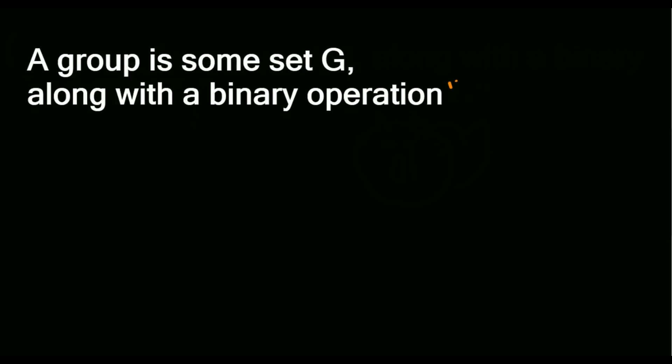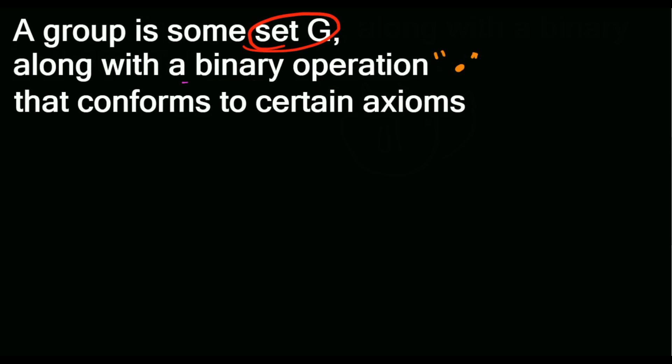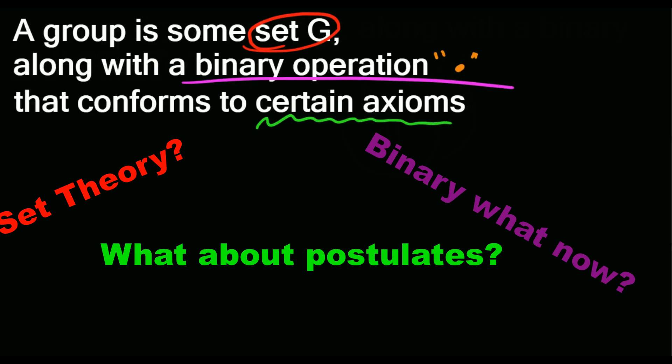So we define a group as some set G, along with a binary operation that conforms to certain axioms. Quite wordy, right? Well, unfortunately, most of the questions we answer in abstract algebra seem to pose a hundred more. We need to define these terms properly to really understand groups.